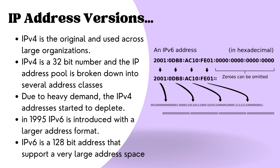IP version 4 was first used in 1982 on SATNET and has since been adopted across the world in billions of devices. However, towards the latter part of the 1980s, it became apparent that the IPv4 pool was going to run out of IP addresses given the rate that the internet was expanding and the number of devices increasing. Therefore, the world came up with a new version called IP version 6 in 1995, with a larger address format that enables a very large address pool. The shortcomings found in IPv4 were also addressed in IPv6.